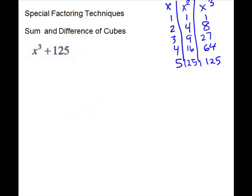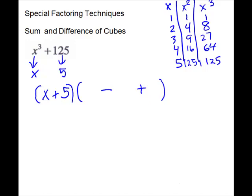Next we have x cubed plus 125. Two terms, exponent of three — we're going to try cubes. So we get the cube root: it will be x, and it will be a five. So we'll use those pieces with the sign of the problem: x plus five. Second set will be a trinomial. For our signs: the first sign will be the opposite of that. Last sign is always plus. Then we'll go back to our roots: the first root times itself — first root squared. First root times the second root: x times five is the same as 5x. And the last root times itself: five times five is 25.